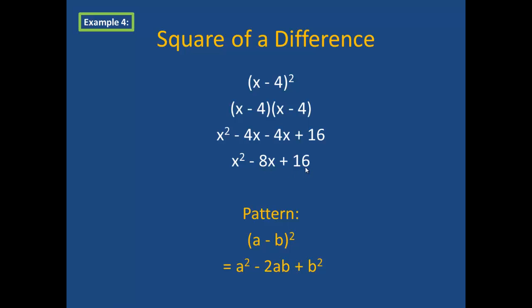Just like the last example, this too has a pattern. Anytime I have a binomial that is a difference, meaning the terms are subtracted, and the entire binomial is squared, the result will always be the first term squared, plus the last term squared, and this time the middle term will be a times b times 2, but it will be subtracted. So I will always get a squared minus 2ab plus b squared. Take a moment and jot this down as example 4 in your notes.